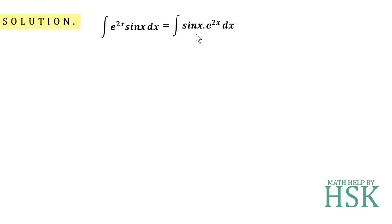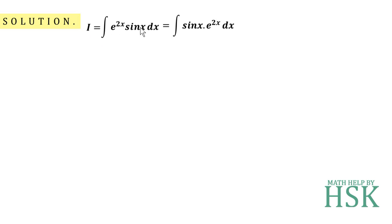I am going to assume sin x to be the first function and e^(2x) as the second function. Most importantly, I am going to assume that i = ∫e^(2x)·sin(x) dx. The idea here is that this same integral is going to appear in the question again, and when it appears I will place it as equal to i, and the integral will be solved.